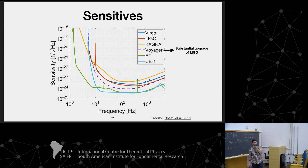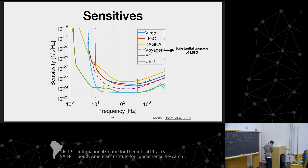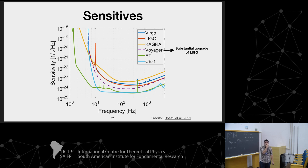Another way to look at the different sensitivities is the detection horizon plot — the maximum redshift at which you can detect sources as a function of total source-frame mass. For LIGO A+, the threshold horizon for 100 solar masses total is around redshift 5. For third-generation detectors like Cosmic Explorer and the Einstein Telescope, you get redshift up to 100. With second-generation detectors you reach redshift 2; GW190521 was at redshift 0.8, the maximum reached so far. But if you want to see pop three black holes, you need the Einstein Telescope, going up to redshift 100 — well beyond the reionization epoch when pop three stars initially formed.